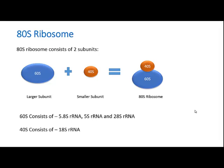The 80S ribosome also consists of two subunits: a larger subunit and a smaller subunit. The larger subunit is called the 60S subunit and the smaller subunit is called the 40S subunit. The 60S larger subunit consists of 5.8S rRNA, 5S rRNA, and 28S rRNA, whereas the 40S smaller subunit consists only of 18S rRNA.